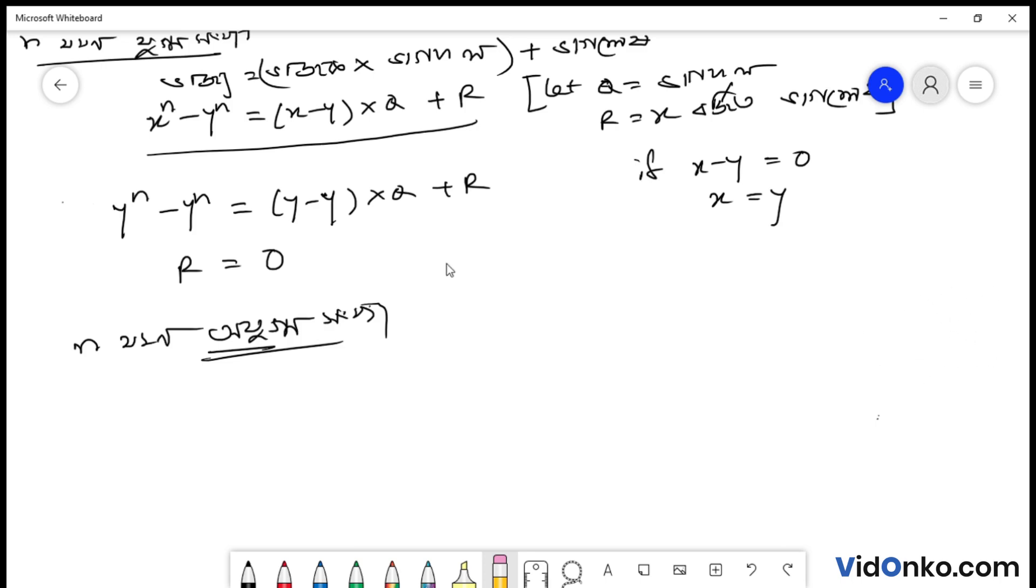If the question has not declined, then we conclude: x to the power n minus y to the power n equals x minus y into q plus r where r equals 0. Therefore, x minus y is a factor of x to the power n minus y to the power n.